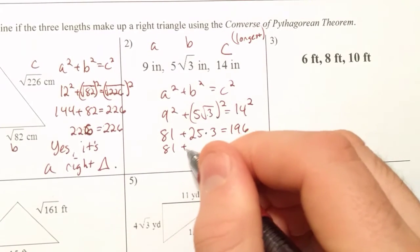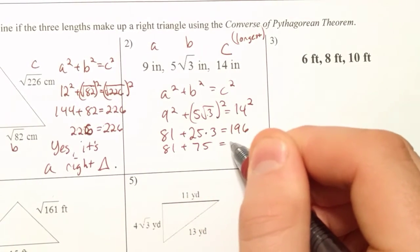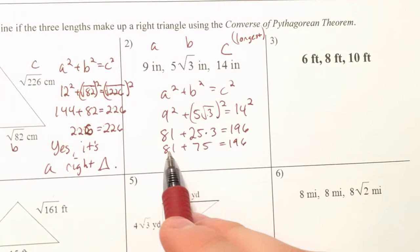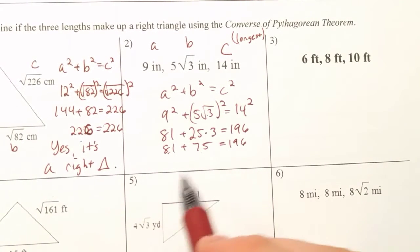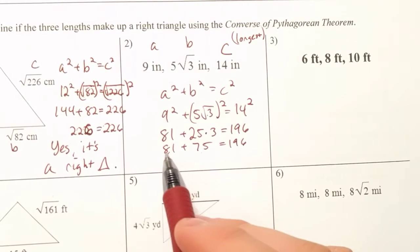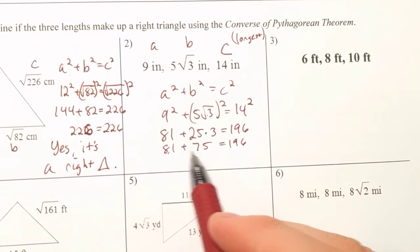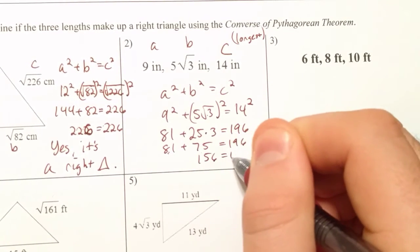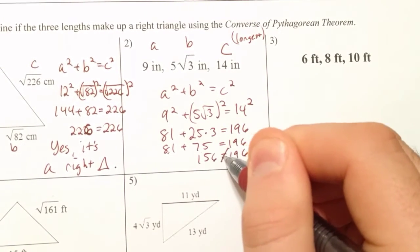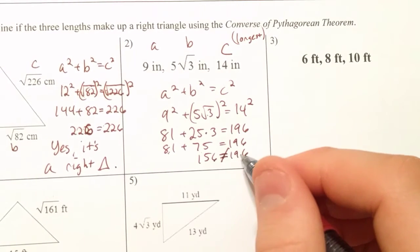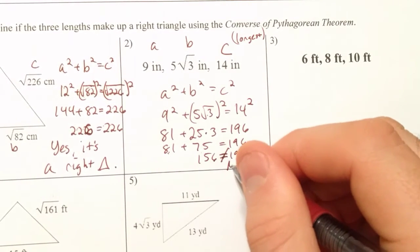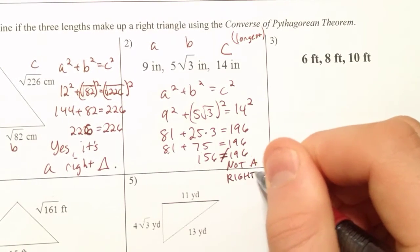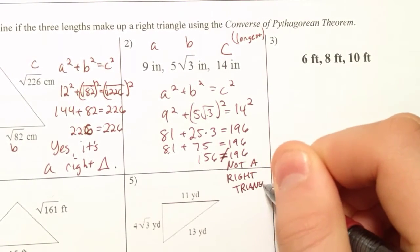And 14 squared is 196. 25 times 3 is 75. So if 81 plus 75 is equal to 196, we have a right triangle. If they're unequal, though, we don't. 81 and 75 makes 156. 156 doesn't equal, doesn't equal sign or not equal sign, 196. So you're going to put not a right triangle because they're unequal.